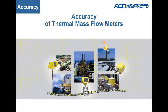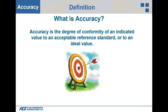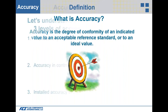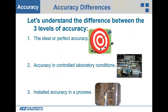Accuracy of thermal mass flow meters — let's get grounded on accuracy. Accuracy is the degree of conformity of an indicated value to an acceptable reference standard or to an ideal value. Basically, it's hitting that infinite bullseye in a target. There are basically three levels of accuracy. The ideal or perfect accuracy is hitting that bullseye — that's the infinite accuracy.